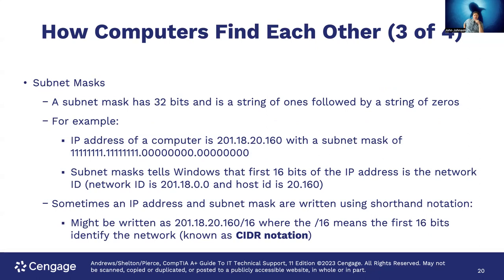A subnet mask has 32 bits — a string of ones followed by a string of zeros. For example, if a computer's IP address is 201.18.20.160 and the subnet mask has 16 ones followed by 16 zeros, the subnet mask tells Windows that the first 16 bits are the network ID — 201.18.0.0 — and the host ID is 20.160. Sometimes an IP address and subnet mask are written in CIDR notation, such as 201.18.20.160/16, where /16 means the first 16 bits identify the network.